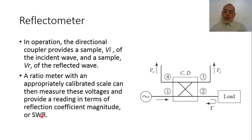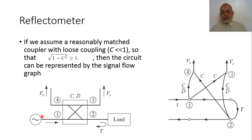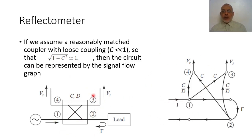A ratio meter with an appropriately calibrated scale can measure this voltage and provide readings in terms of reflection coefficient magnitude or standing wave ratio. In addition to the measurement, a calibration process will be needed. To analyze this simple reflectometer, we are going to use its signal flow graph.